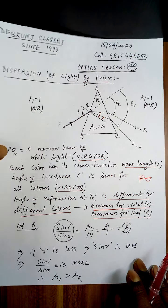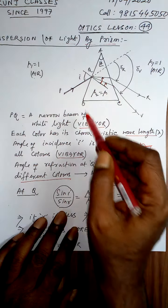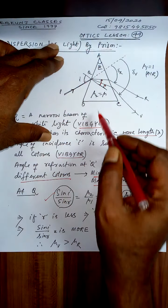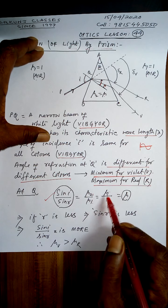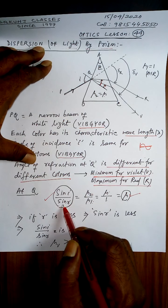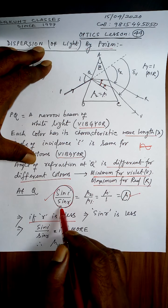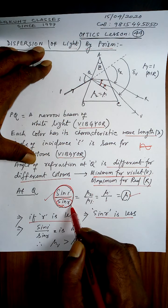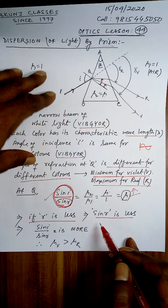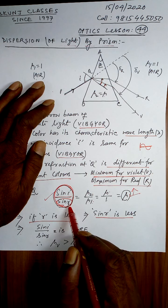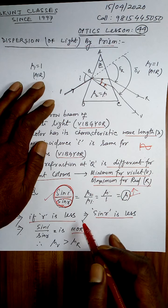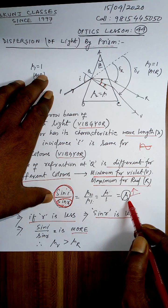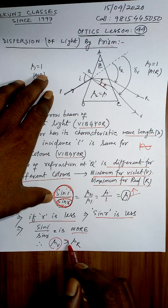At Q, sin I / sin R equals mu2 / mu1, which equals mu (since mu1 = 1). This is a fraction: if R is less, sin R is less, and since it is in the denominator, the fraction increases, meaning mu increases. Since R is minimum for violet, sin R is least for violet, therefore the refractive index for violet is maximum. So refractive index of violet is greater than refractive index of red.